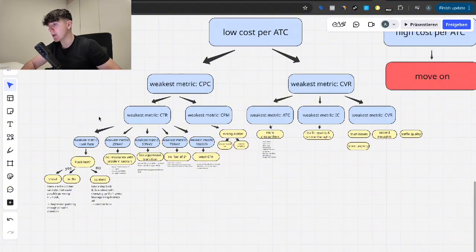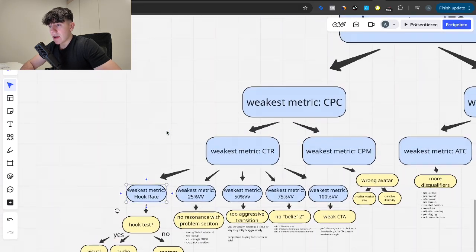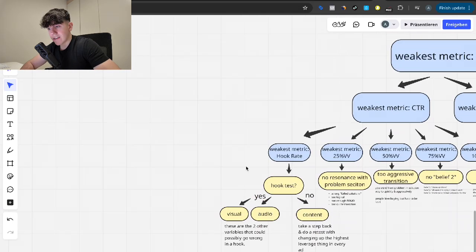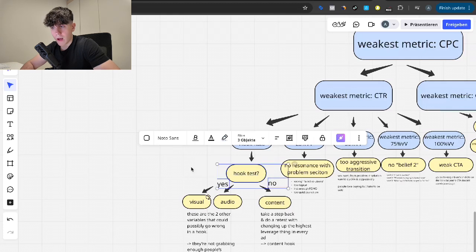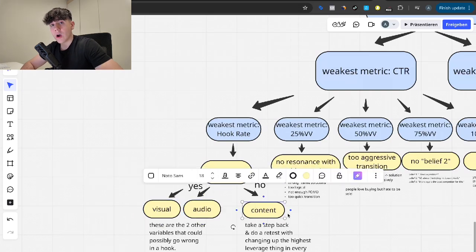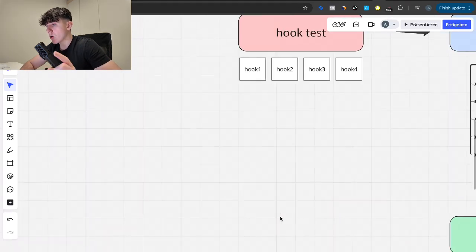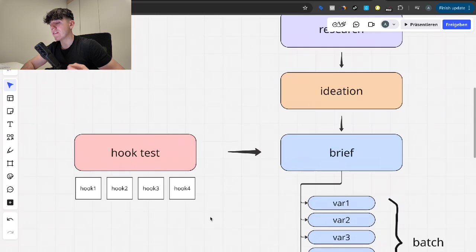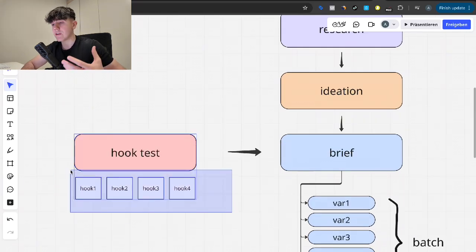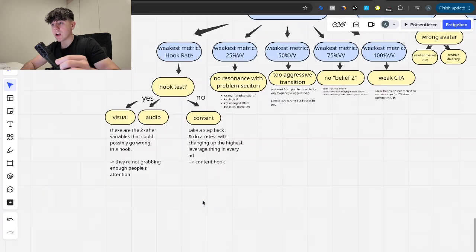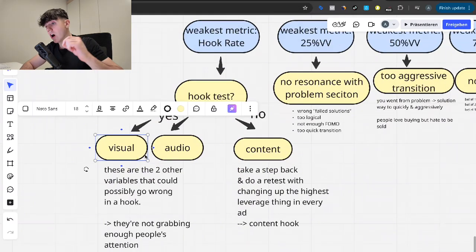So what exactly to do for every single one of these metrics? I'm just going to literally give you everything, every SOP that you can just do and directly implement into your brand, into your creative strategy. So let's say you go down this rabbit hole. It's the CPC. It's the click-through rate. It's the hook rate. Cool. Now we ask ourselves, have we done a hook test prior to this or not? If yes, then we're only going to make the iterations on the visual level and on the audio level. If no, then we know that we have to do a content variation.